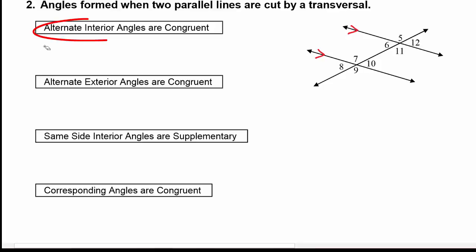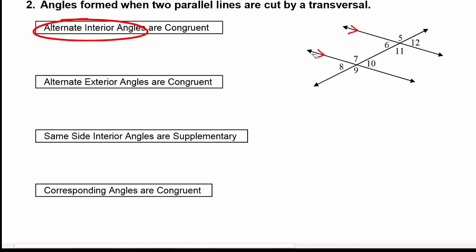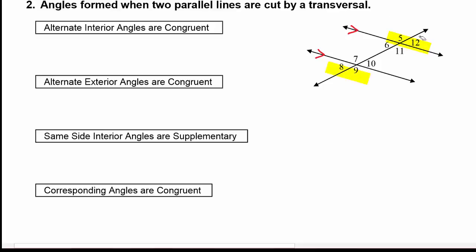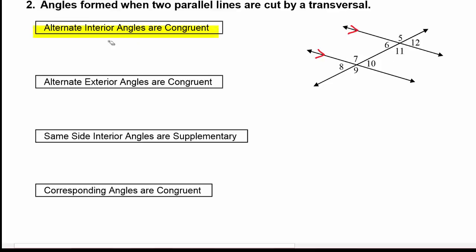The first special pair is alternate interior angles. The word 'alternate' means they have to be on alternating sides of the transversal — not the same side. 'Interior' refers to being between the two parallel lines, so the interior angles are 7, 10, 11, and 6, while the exterior angles are 8, 9, 5, and 12. A pair of alternate interior angles would be angle 7 with angle 11, and this theorem says alternate interior angles are congruent — so angle 7 is congruent to angle 11 and their angle measures are equal.